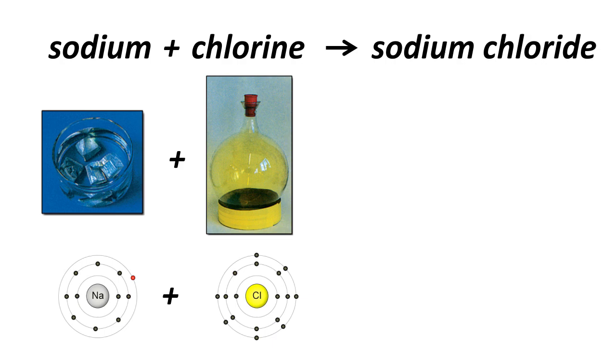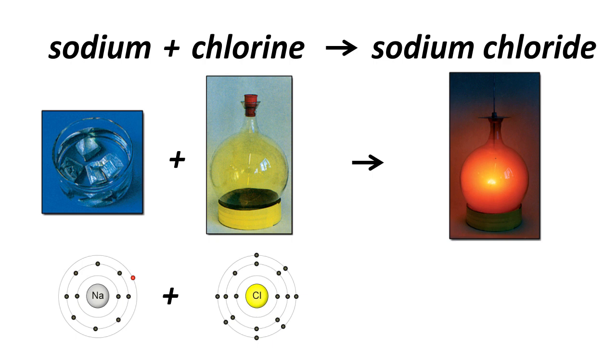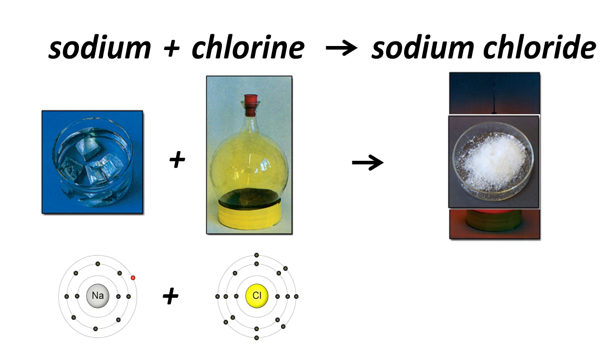You get a very vigorous reaction, gives off a lot of heat, it gives off some light, but if you let things cool down, you get this white powder, this white crystalline solid that you can sprinkle on your french fries. What happens on an atomic level is a sodium atom loses one electron from its outer shell. That electron adds in to the outer shell of the chlorine atom, and this transfer of electrons gives us a positive sodium ion and a negative chloride ion. The two attract each other and make the compound sodium chloride.